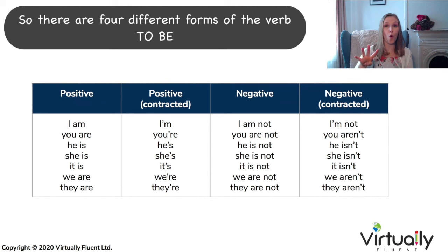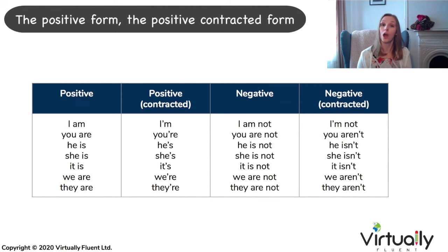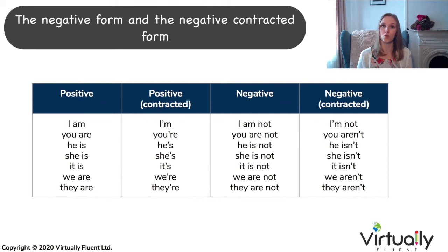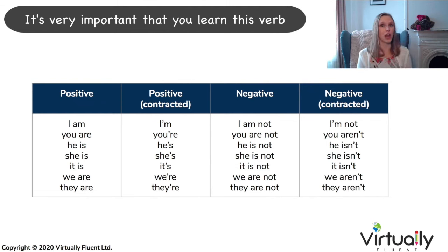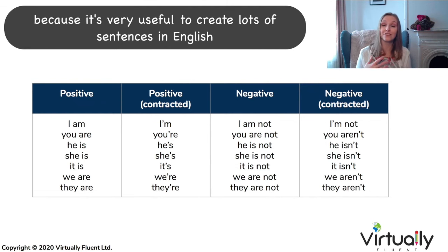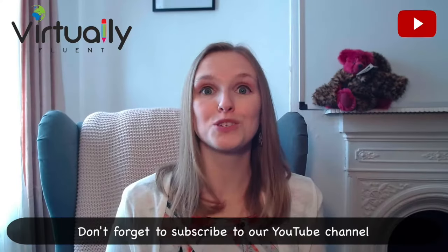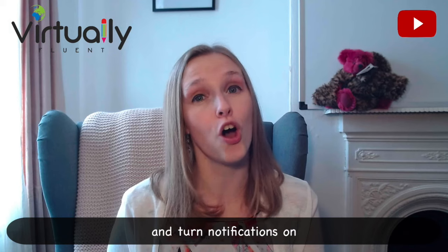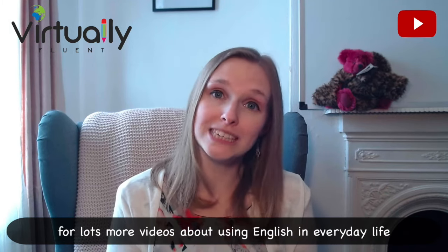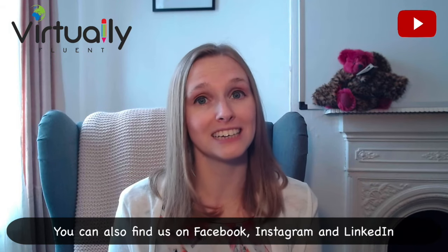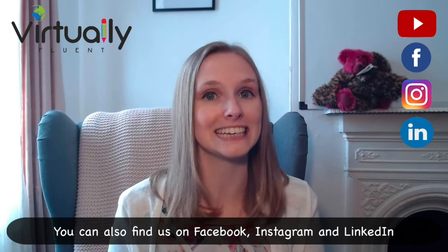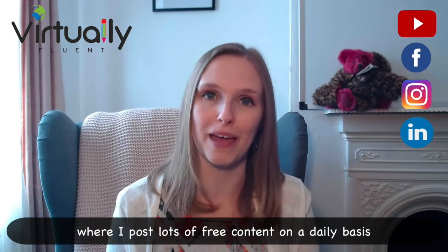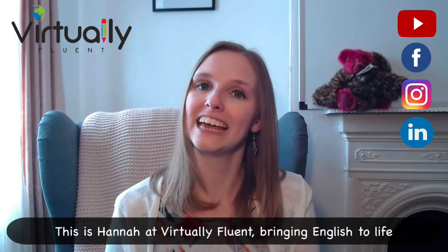So there are four different forms of the verb to be. It's very important that you learn this verb because it's very useful to create lots of sentences in English. Don't forget to subscribe to our YouTube channel and turn notifications on for lots more videos about using English in everyday life. You can also find us on Facebook, Instagram and LinkedIn where I post lots of free content on a daily basis. This is Hannah at Virtually Fluent, bringing English to life.